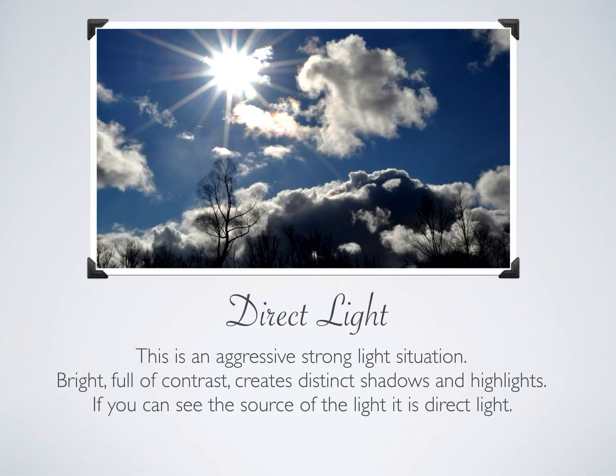First one: direct light. In a direct light photograph, it is an aggressive, strong lighting situation. It is bright and full of contrast. It creates distinctive shadows and highlights. If you can see the source of the light, it is a direct light. So in this photograph, you could see the sun. You could see how it lights up the clouds and the highlights are really, really light and the shadows are really, really dark. So if you have a very strong light source, it's direct light.